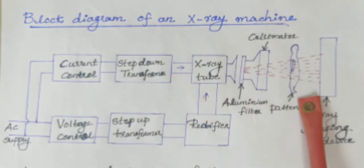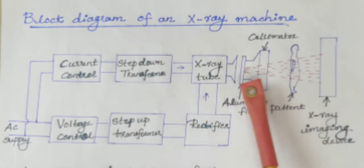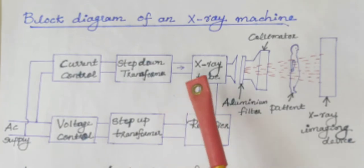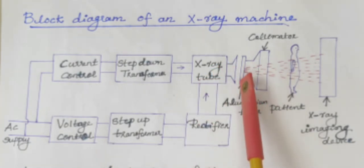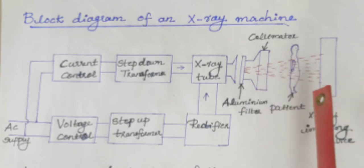The basic components of an x-ray machine are power supply arrangement, x-ray tube, aluminum filter, collimator, and x-ray imaging device.